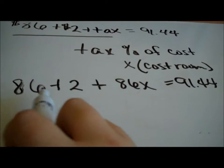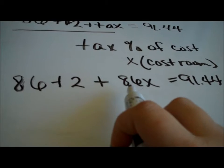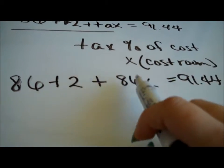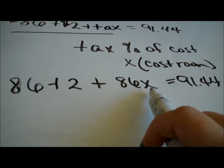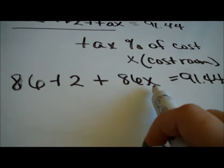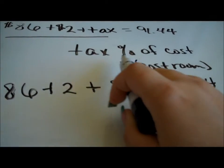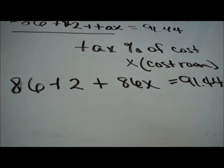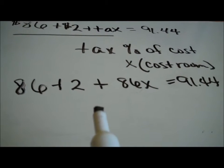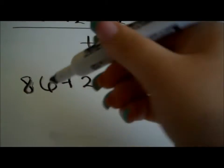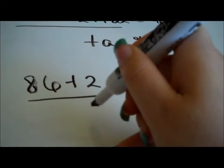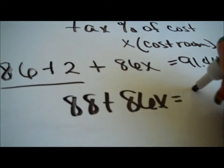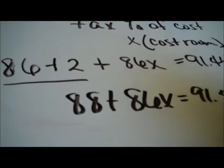This is the cost of the room, this is the cost of the soda, and this is the tax that will be added on. Tax is a percent of the cost; we don't know what the percent is so we represent it with x. On your test you would say x equals the tax percent that we're looking for. Is the left hand side simplified? No — we need to add the 86 and the 2 together to get 88 plus 86x equals $91.44.